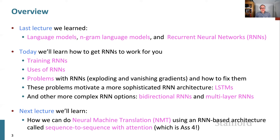Last lecture, I introduced the idea of language models — probabilistic models that predict the probability of next words given a sequence. We looked at n-gram language models and started into recurrent neural network models. Today, we're going to talk more about the simple RNNs we saw before, talking about training RNNs and uses of RNNs, but then we'll also look into the problems that occur with RNNs and how we might fix them.